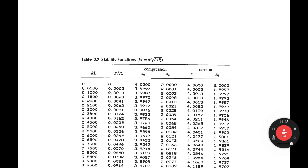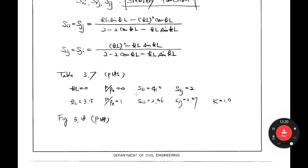SII equals 4, SIJ equals 2. These are for compression, okay? — I mean P equals compression. In the case of tension, SII and SJJ values are the same as what you already learned in the slope deflection equation in undergraduate study. Let's look at some specific cases.